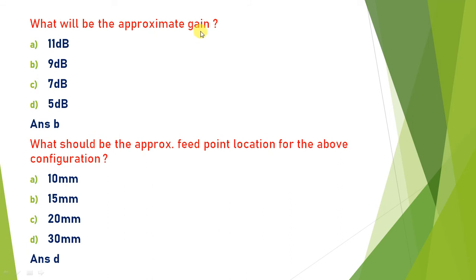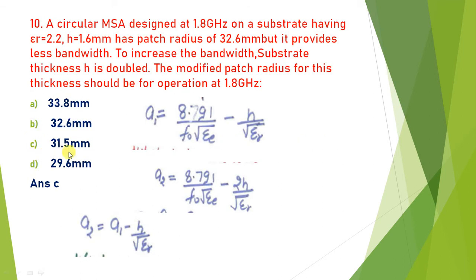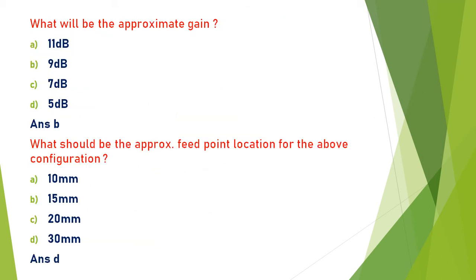The approximate gain for circular MSA is generally between 8 to 10 dBi, so 9 is the correct option — answer is B. For the feed point location, the feed point must be nearest to the patch radius. The patch radius is 31.5 mm, and the closest answer value is D.